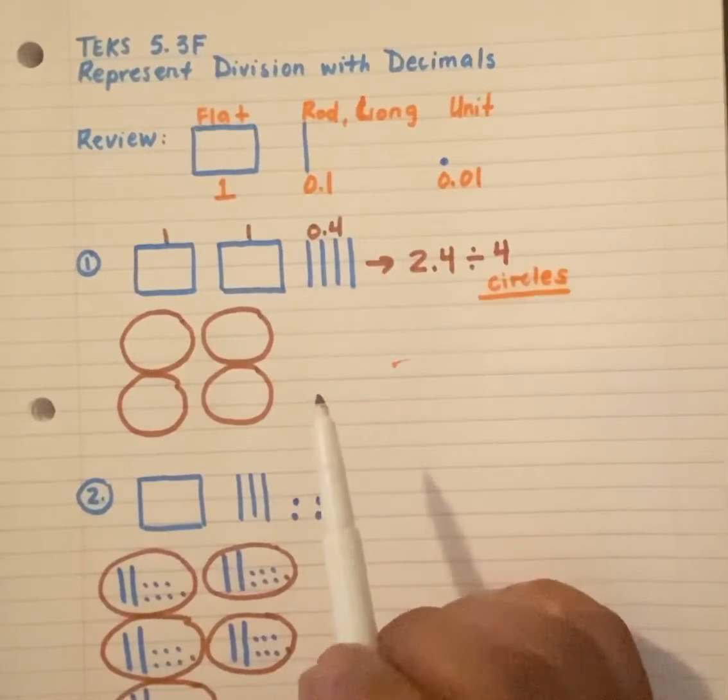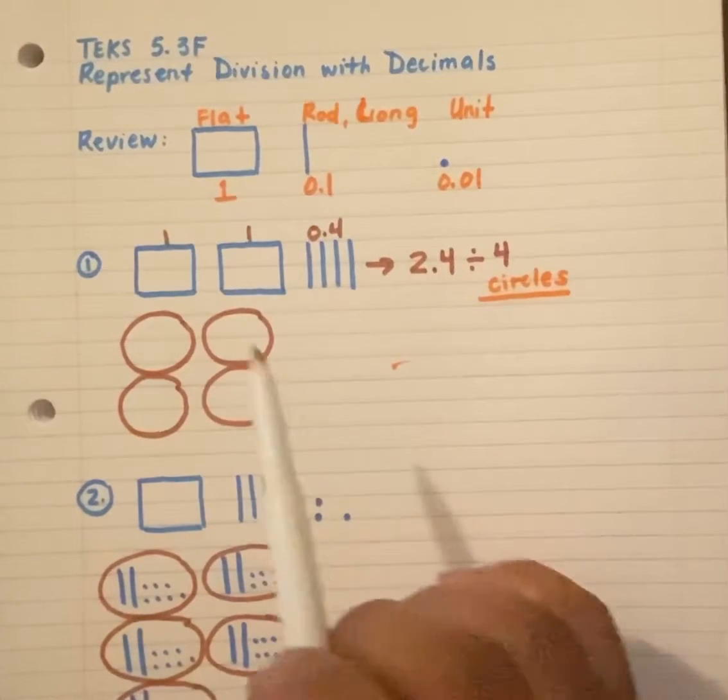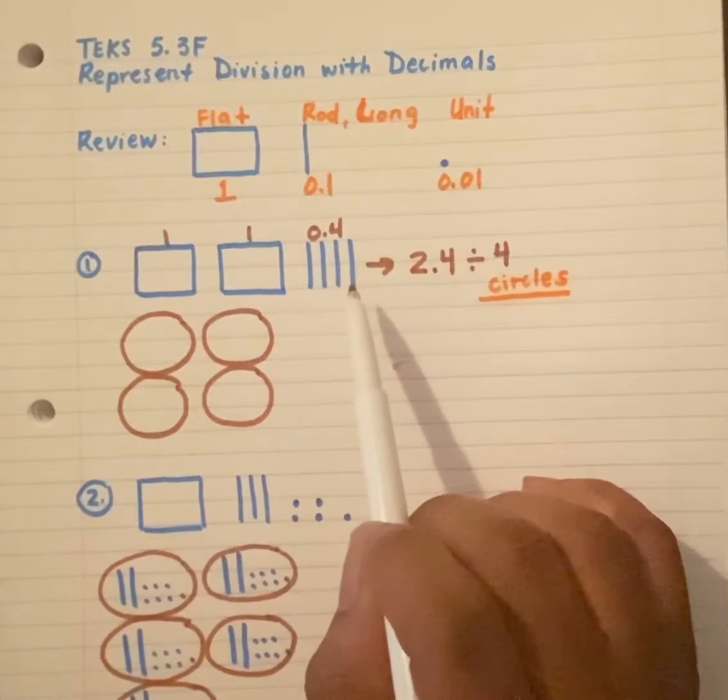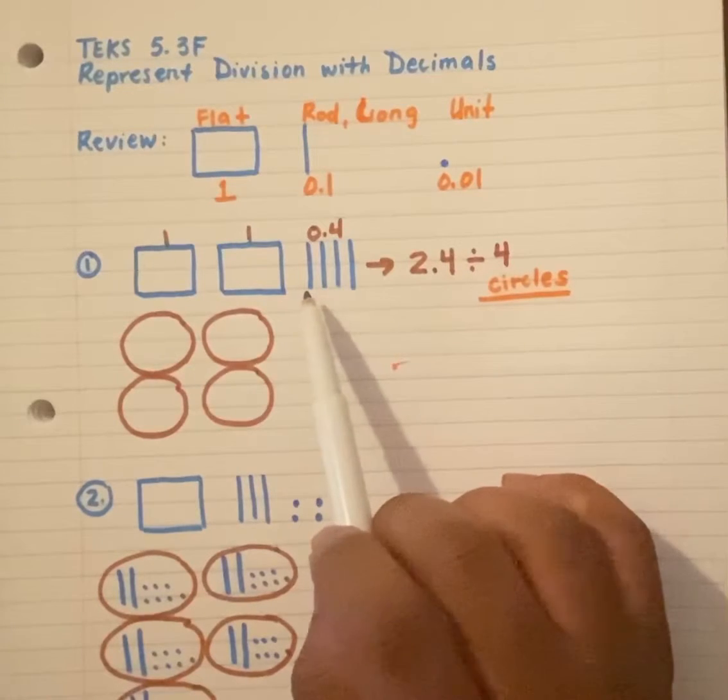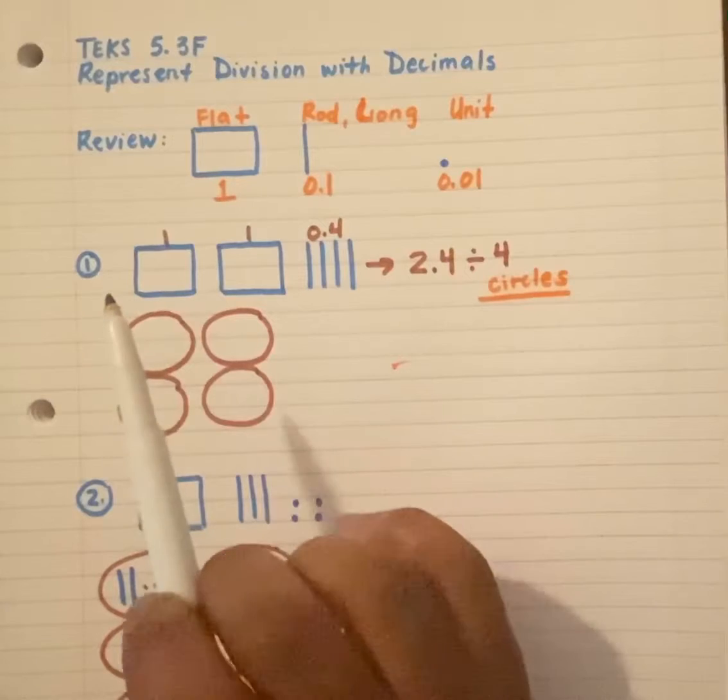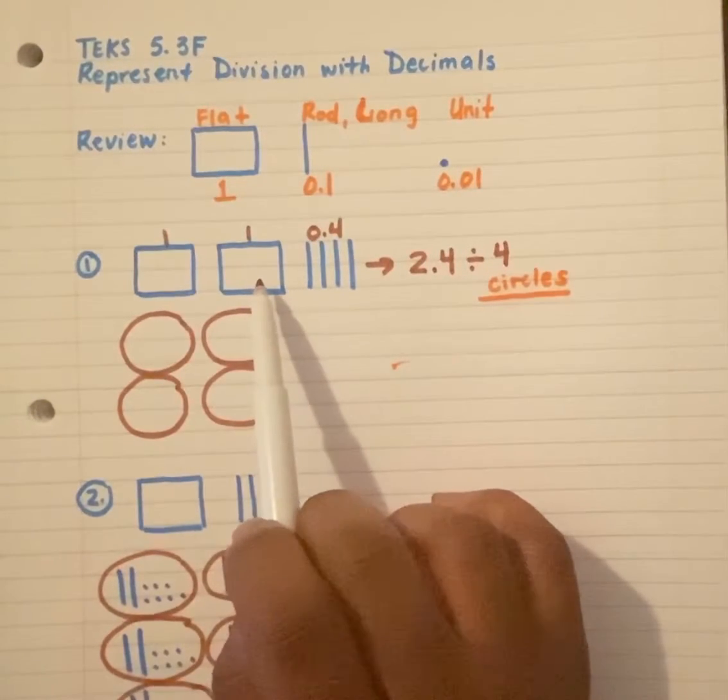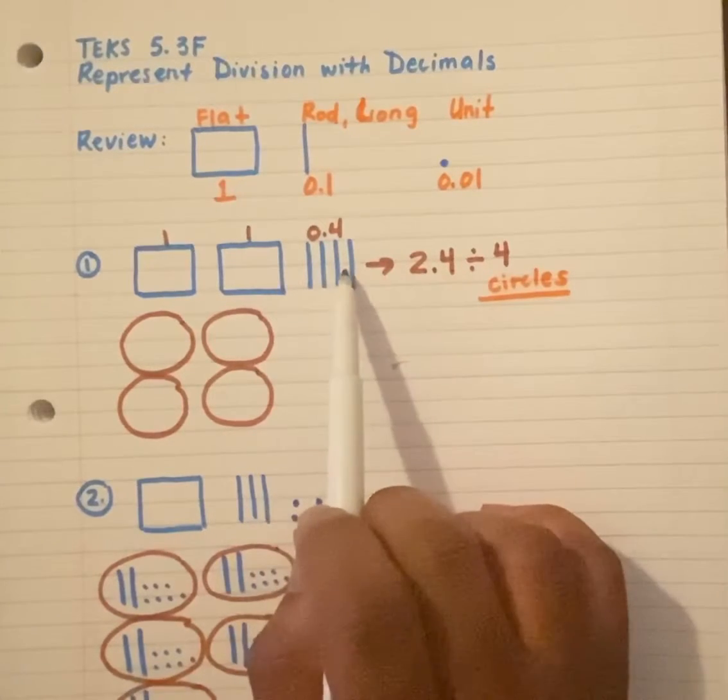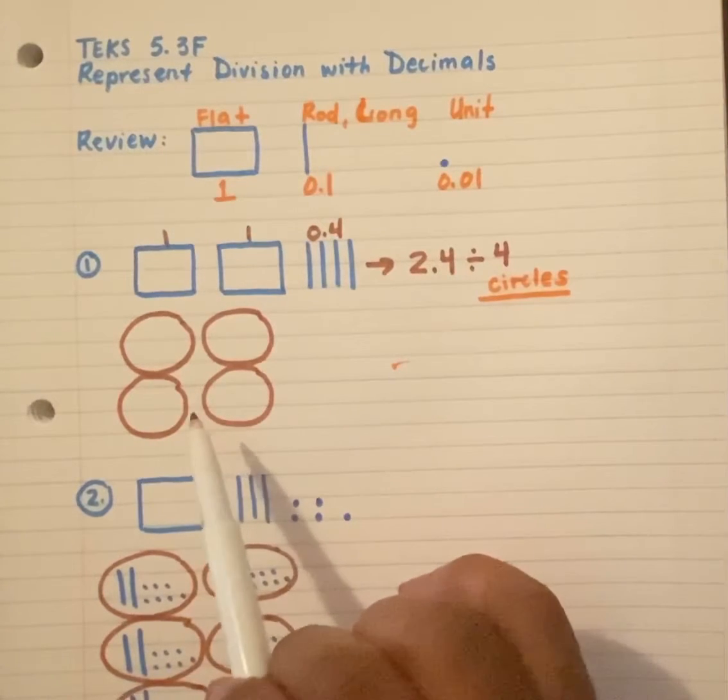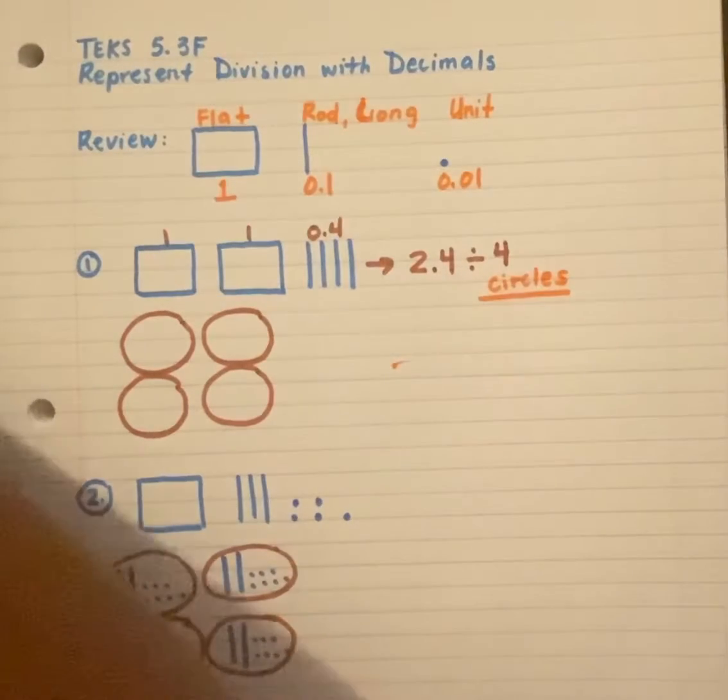Now, remember, this TEKS wants to know, can you identify which model represents the division? So I have two and four-tenths. In reality, I have 24 rods or 24 longs because inside of each flat is ten rods. So there's ten rods here, ten rods there plus four more makes 24.